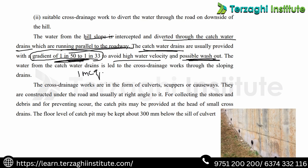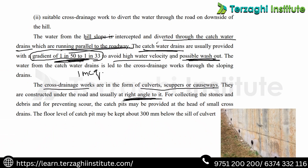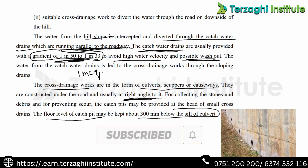Cross drainage works — we will provide suitable cross drainage works at suitable intervals. For cross drainage we have culverts, scoopers, or crossways. Scoopers are a type of cross drainage work — they are constructed under the road, usually at right angles to it. Catch water drains run parallel to the roadway. The floor level of the catch pit is 300 mm below the sill of the culvert.